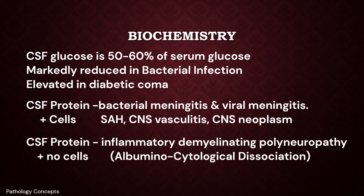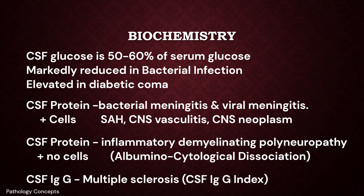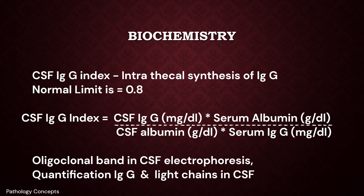Elevated CSF protein with normal cell counts, referred to as albuminocytologic dissociation, is found in acute and chronic inflammatory demyelinating polyneuropathies such as Guillain-Barré syndrome. Low concentrations of immunoglobulins are normally present in CSF, mainly IgG. Quantification of CSF immunoglobulins is performed in cases of multiple sclerosis, and the CSF IgG index is the appropriate test to detect intrathecal synthesis of IgG.